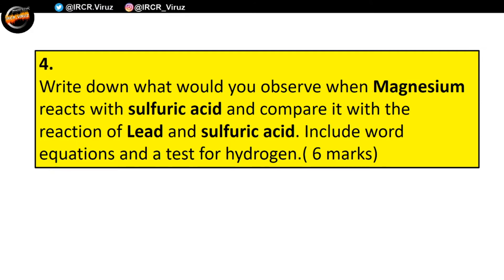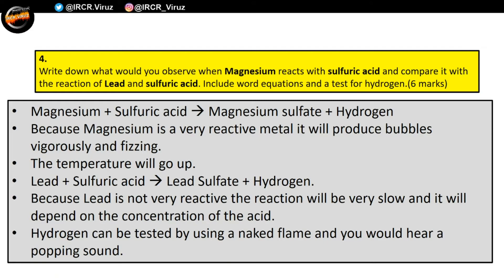Let's have a look at the answers for task four. Magnesium and sulfuric acid will give you magnesium sulfate and hydrogen — one mark. Because magnesium is a very reactive metal, it will produce bubbles vigorously and fizz — two marks. The temperature will go up — three marks. Lead plus sulfuric acid will give you lead sulfate plus hydrogen gas — four marks. Because lead is not very reactive, the reaction will be very slow depending on the concentration of the acid. Hydrogen can be tested using a naked flame and you would hear a popping sound — six marks, done and dusted.